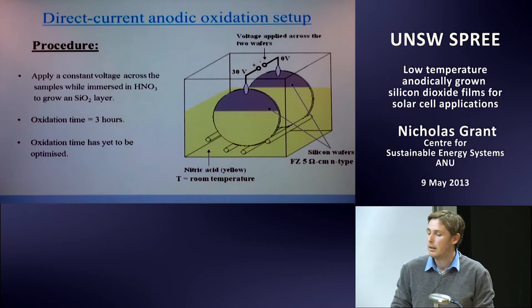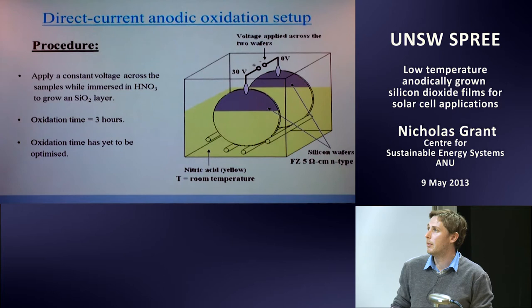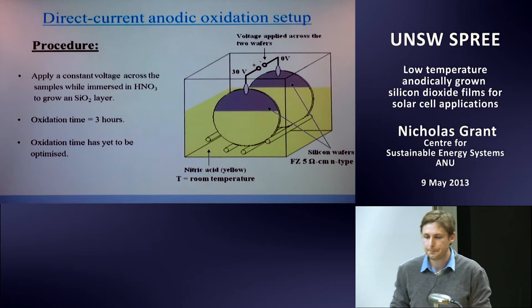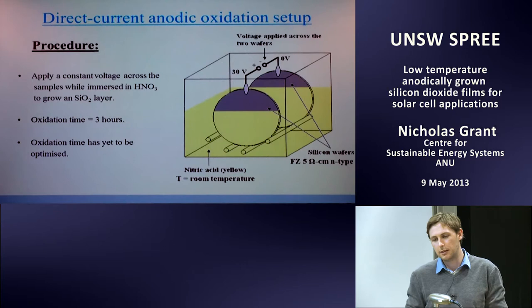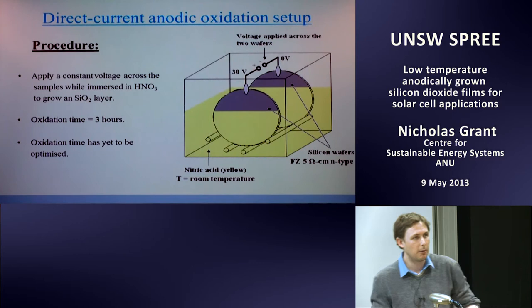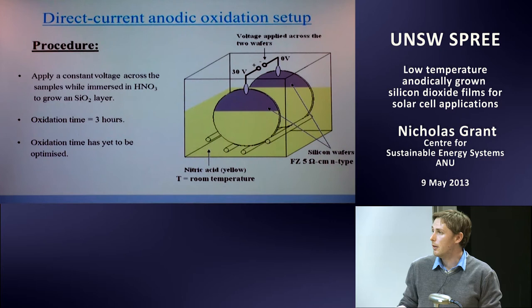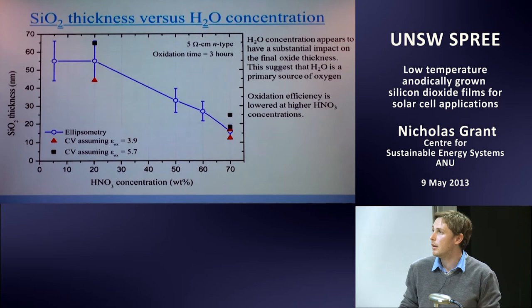Now let's look at the direct current anodic oxidation method. In this procedure, you simply dunk the wafers in nitric acid, contact them, and apply a 30 volt bias. The sample at high potential — the anode — grows the oxide. The oxidation was carried out for three hours; this hasn't been optimized yet. The nitric acid is held at room temperature and these are five ohm-centimeter n-type wafers.